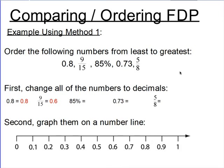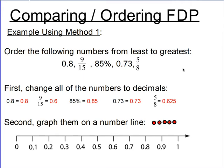Eighty-five hundredths is a percent, and remember the percent means out of one hundred. So you can write eighty-five percent as eighty-five out of one hundred, or eighty-five hundredths. The other thing you could do is put your decimal point at the end of the number and move it over two spaces to the left, and you'll get the same answer — eighty-five hundredths. Seventy-three hundredths is already in decimal form, so I'll leave that. And five eighths I'm going to divide just like nine fifteenths: five divided by eight equals six hundred twenty-five thousandths.